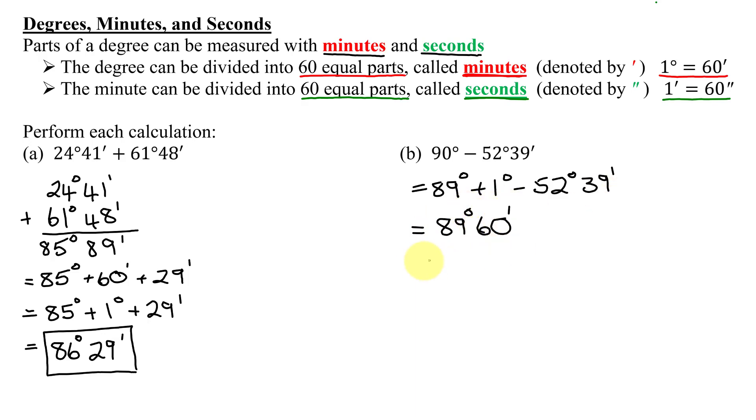And now I'm going to work vertically minus 52 degrees 39 minutes. So now I have 60 minutes minus 39 minutes, which is 21 minutes, and 89 degrees minus 52 degrees, which is 37 degrees.